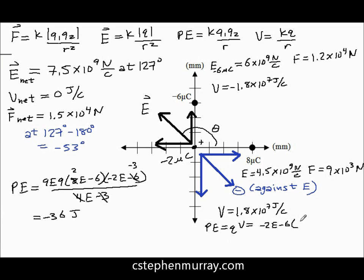Times 1.8 times 10 to the 7th, and that gives me 2 times 1.8 is negative 3.6, and that gives me times 10 to the 1, which is negative 36 joules.